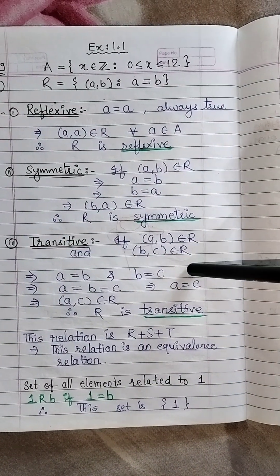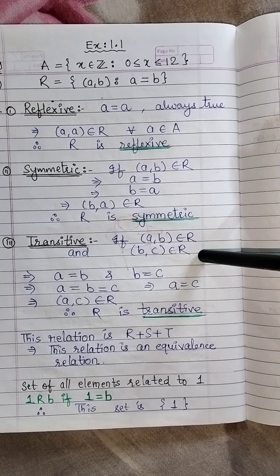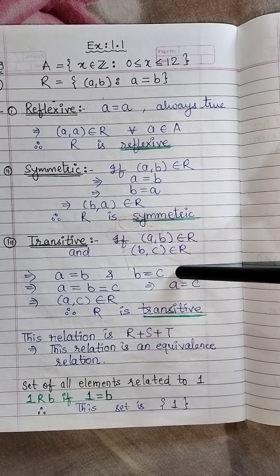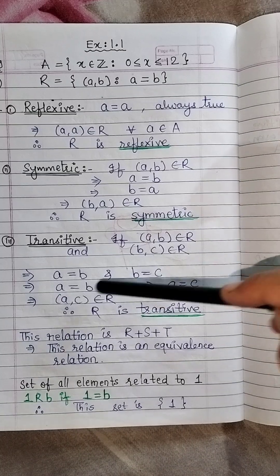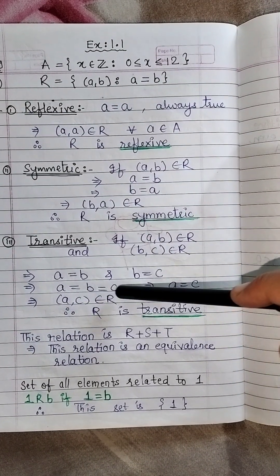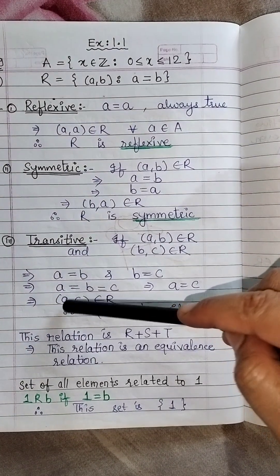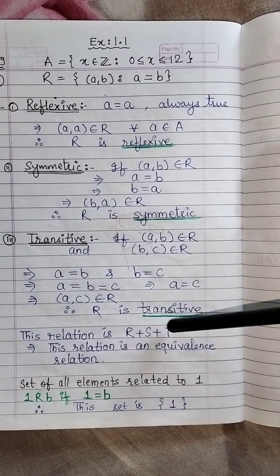For transitive, you have to take two pairs. AB belongs to R and BC belongs to R. AB belongs to R means A is equal to B. BC belongs to R that means B is equal to C. So you have that A is equal to B and B is equal to C. That implies that A is equal to C. So the pair AC belongs to R and hence it is transitive.